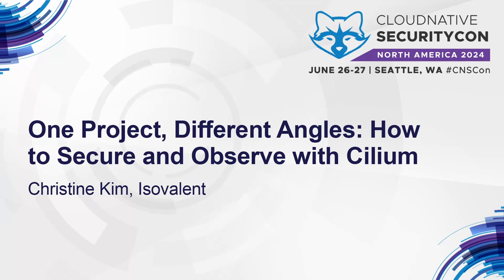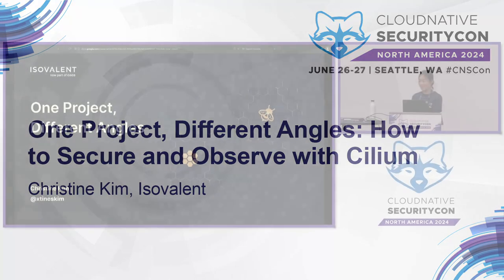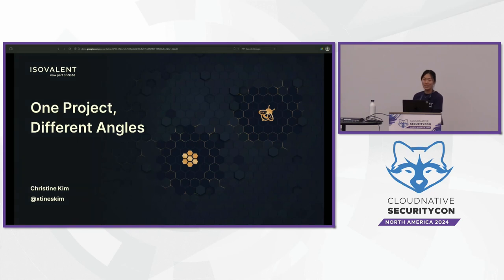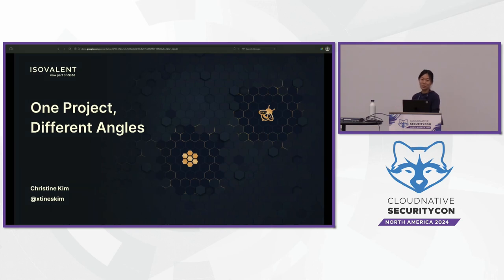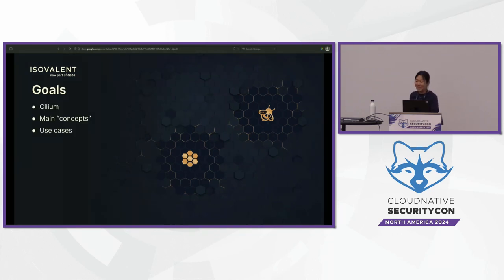Hello everyone, welcome to my talk, One Project Different Angles. My name's Christine, I work at Isovalent and I do some open source development. A lot of my passion is around Gateway API, but the Cilium project as a whole is something I'm very passionate about. Prior to Isovalent I worked at Google doing networking and Anthos Service Mesh. Outside of work, I like to run and rock climb. Today I'm going to be talking about Cilium, some main concepts and use cases.